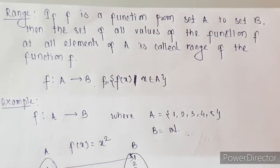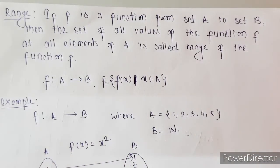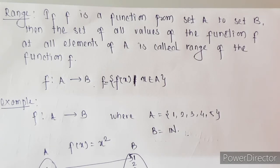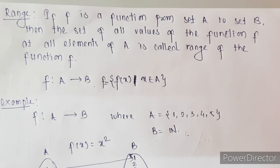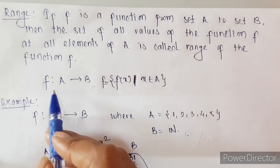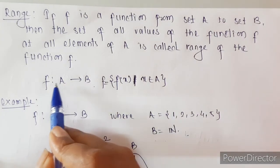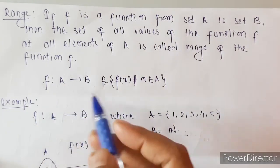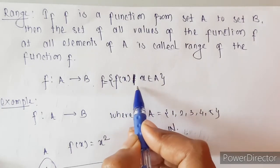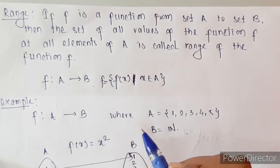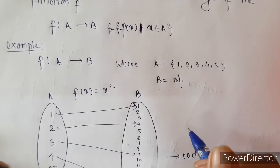Next is range of a function. If f is a function from set A to set B, then the set of all values of the function f at all elements of A is called the range of the function f. So the set of all f(x) where x belongs to A is nothing but the range of the function.